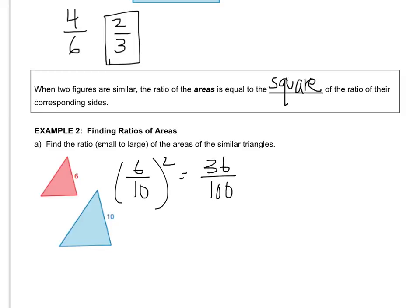The actual areas might not be 36 and 100, but the relationship is 36 to 100. It could be 72 and 200 — that's also equivalent to the ratio. The ratio that will always be the same is 36 over 100. Area is a two-dimensional measure, which is why you have to square the side length ratio.